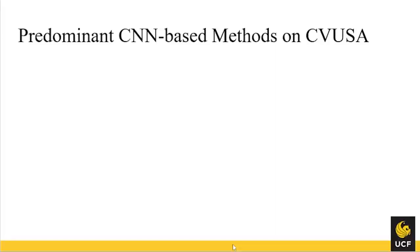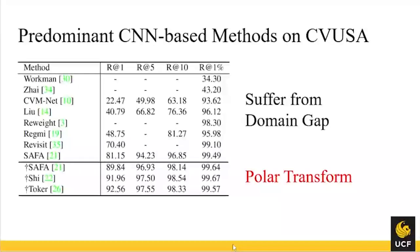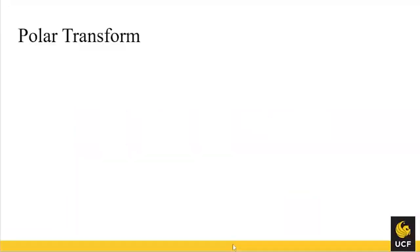Currently, the predominant methods are mostly based on CNNs. Early works suffer from this domain gap and have low performance. Very recently, three recent papers all use a technique called polar transform and are able to achieve very high performance, like over 90% for recall at one. So what is this polar transform?